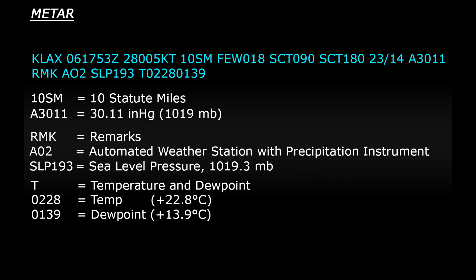So hopefully that sheds a little bit of light on American METARs. Again this was a very simple example, but they can contain much more information such as cloud types, rain intensity, and variable winds. Anyway, I hope this helped — many thanks for watching and I'll catch you later.